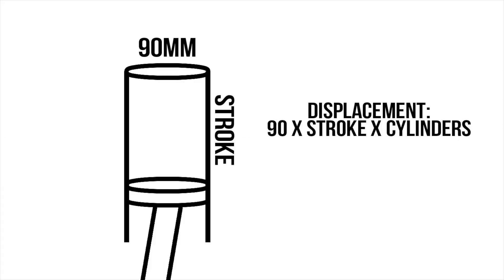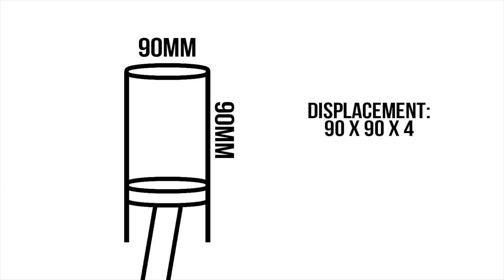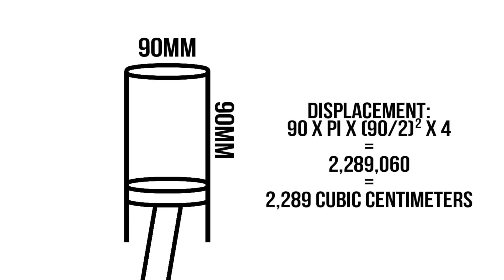Typically, bore and stroke are measured in millimeters, but because we do everything differently here in America, you'll find a lot of American engines — especially older ones — measured in cubic inches rather than cubic centimeters. If we look at the example of a four-cylinder engine with a 90mm bore and a 90mm stroke, you get 90 × π × (90/2)² × 4, which equals 2,289,060 cubic millimeters, or 2,289 cubic centimeters. Mathematically, bore and stroke are really simple.